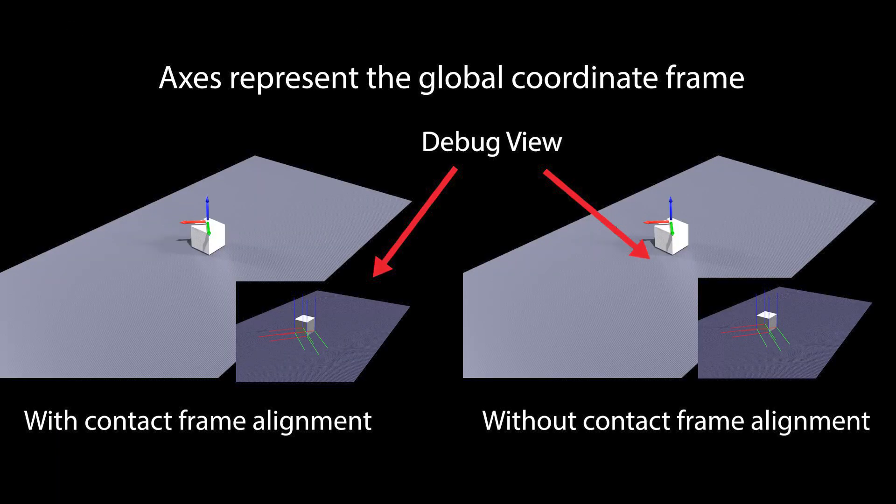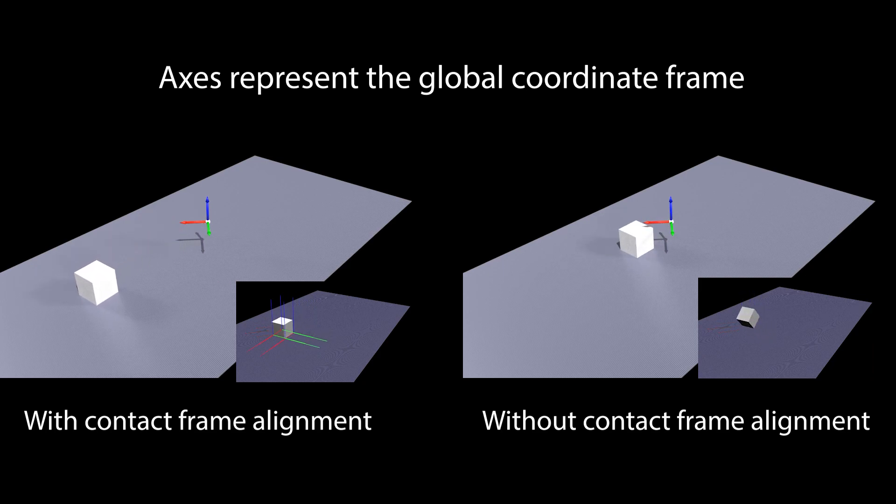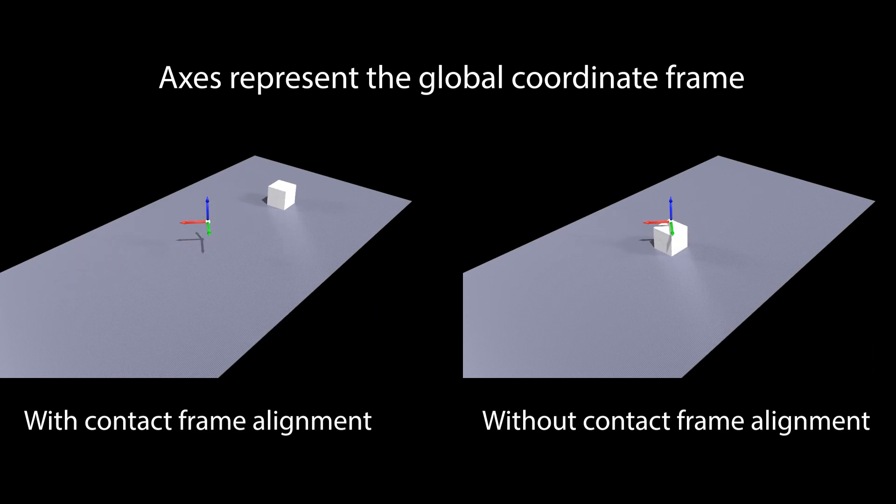We sometimes found it useful to align the contact frame with specific local directions. Here we see the effect of using automatic contact frame alignment versus a globally aligned frame. With contact frame alignment, the example demonstrates the expected anisotropy and asymmetry, whereas the motion for a fixed globally aligned frame exhibits isotropy.